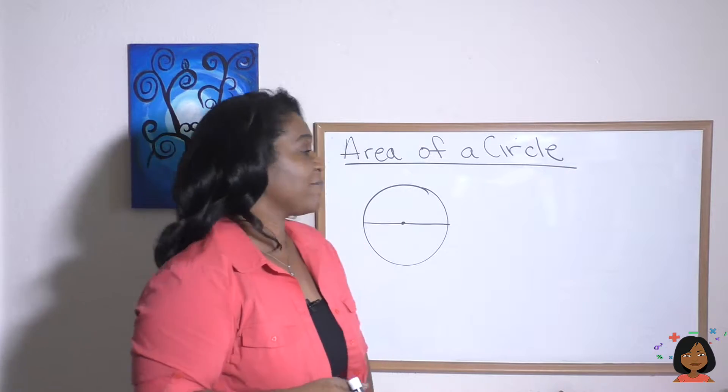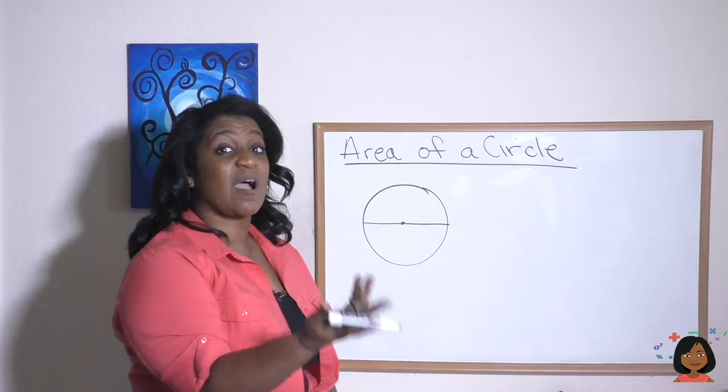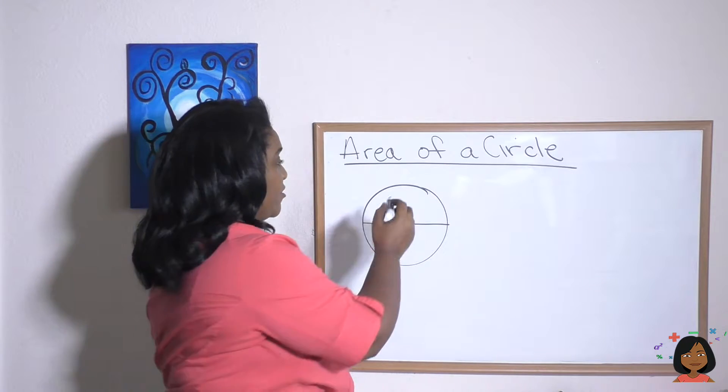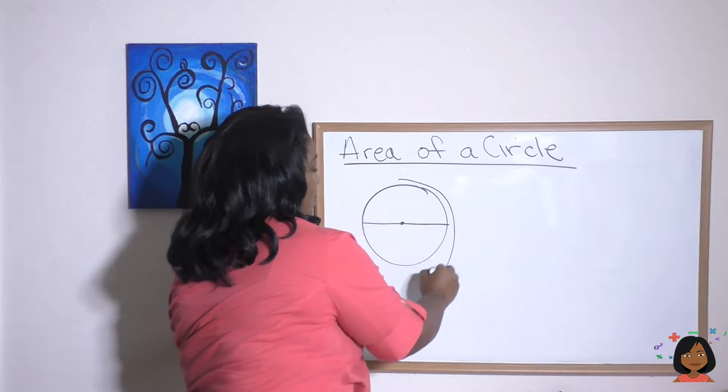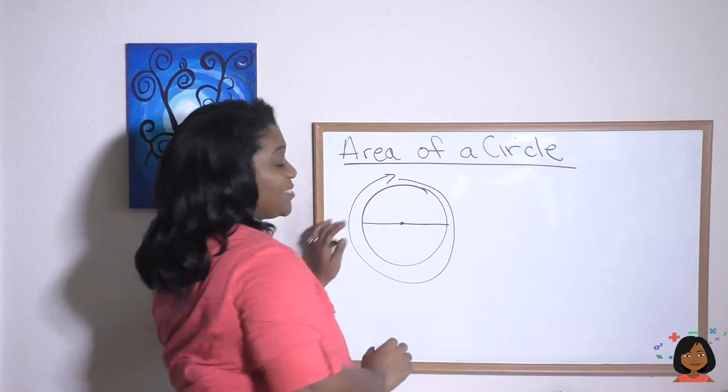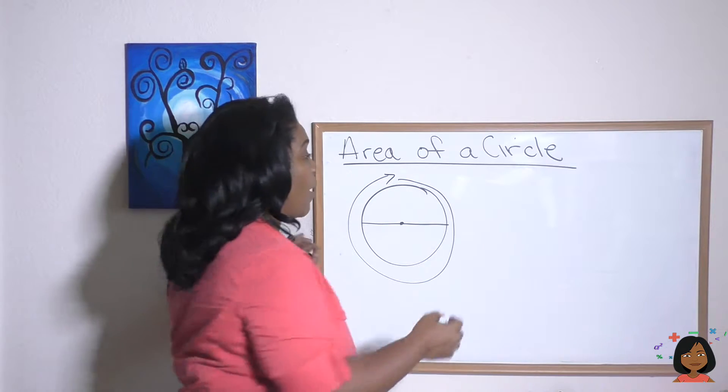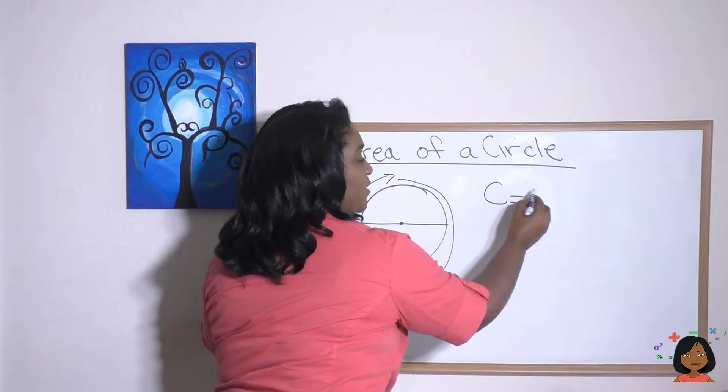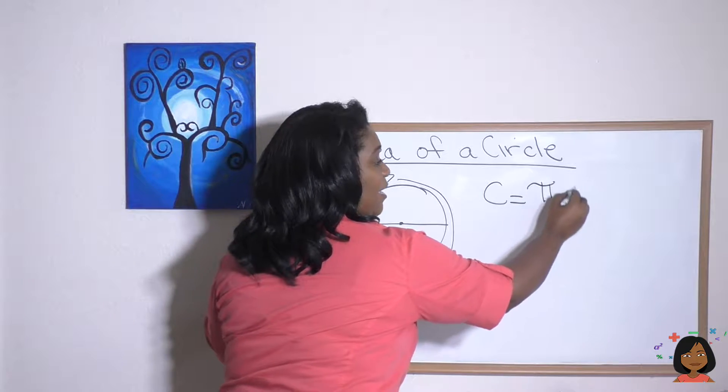As you might remember, we've dealt with the circumference of a circle. Remember, the circumference means the distance all the way around the outside of the circle. And that was, if you remember, circumference equals pi times diameter.